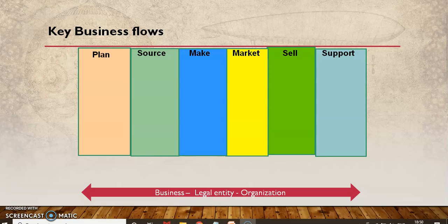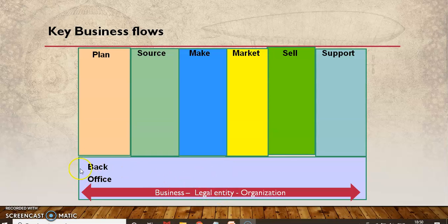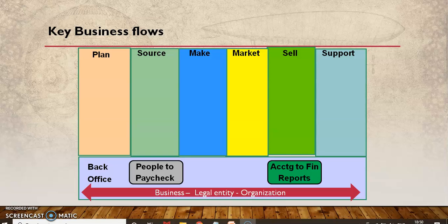Once you have the legal entity in place and an office, you need to have employees, and once you have employees you need to pay them. Based on the number of days they work, you make a payment — that's called the people to paycheck process. This process needs to be accounted for, because that is where all your profit and loss statements are generated. Once you pay, you need to account for it, so you need to have the accounting entries in place.